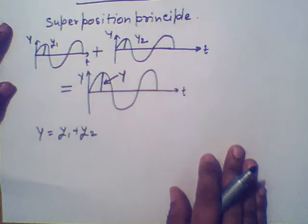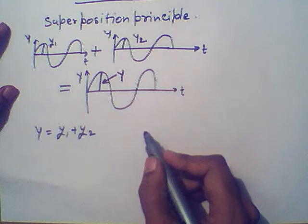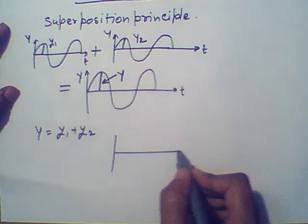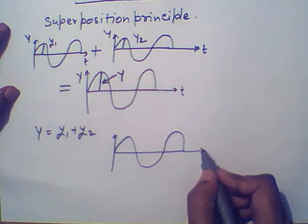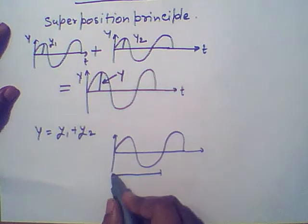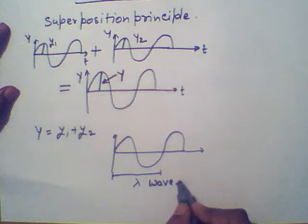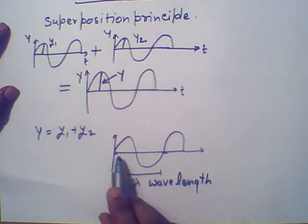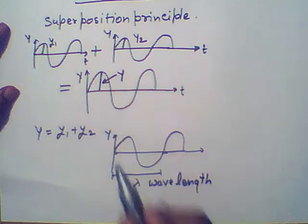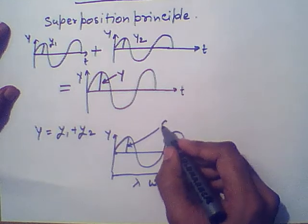Before we go into the detail of interference and the superposition principle, it is important for us to understand concepts related to waves — what is a wave and some basic terminology in wave theory. The distance of one complete cycle — one upper semicircle and one lower semicircle — is known as the wavelength, represented by lambda. Along the Y-axis, we measure the amplitude; the maximum displacement is known as the amplitude.